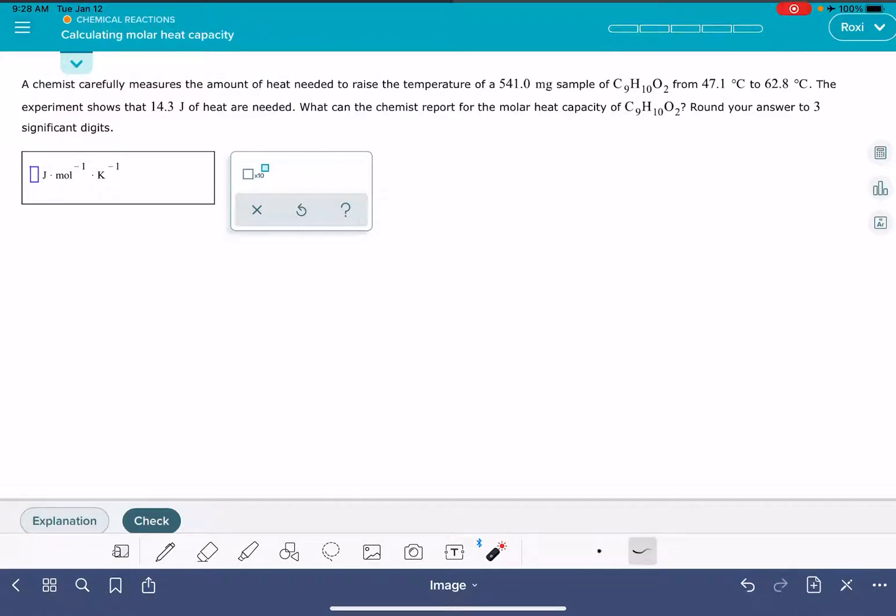So in this problem, we're given a lot of information about a molecule. We're given its mass, a temperature change, and the amount of energy associated with that temperature change. We're being asked to calculate the molar heat capacity.